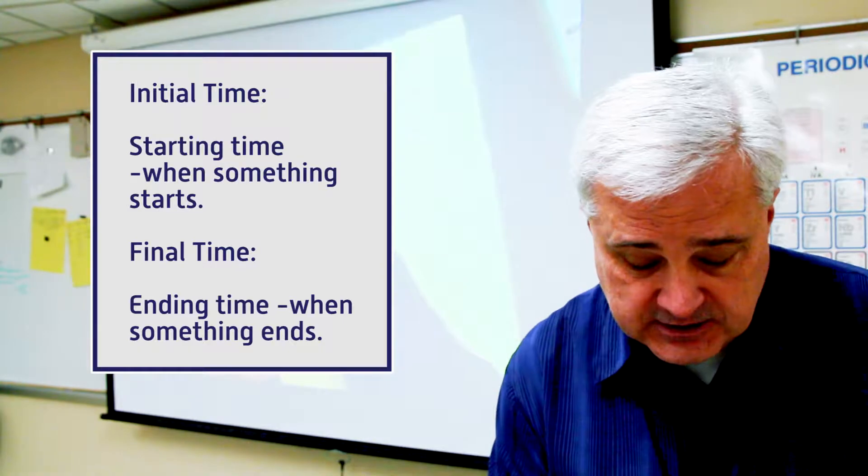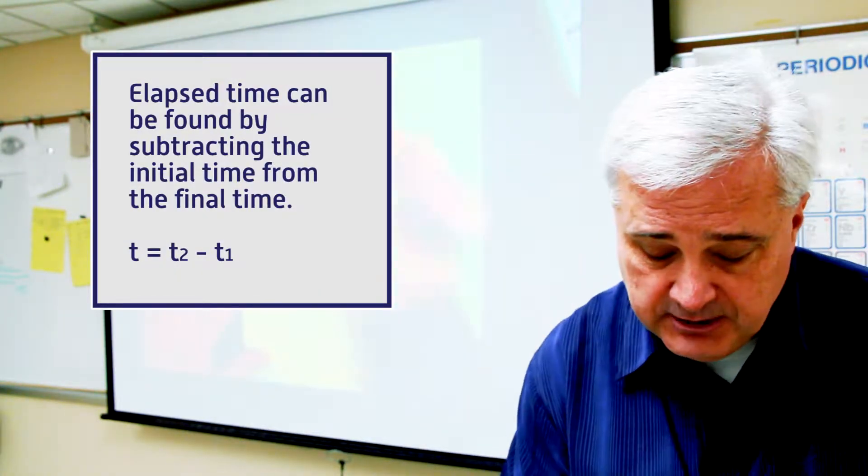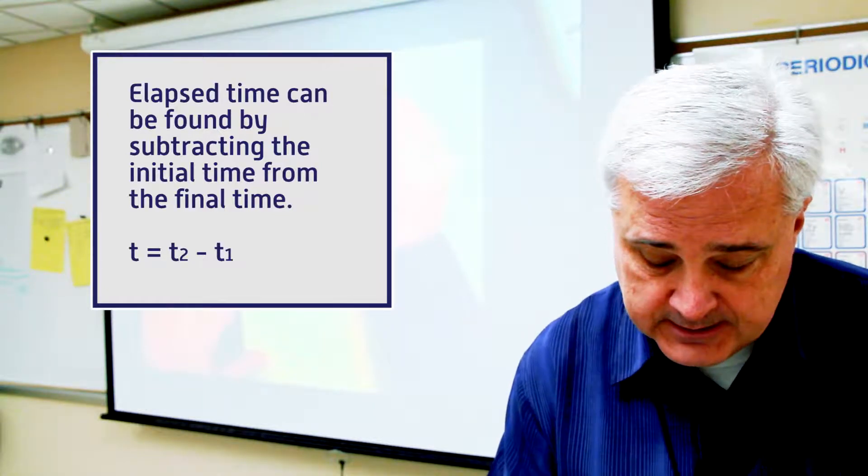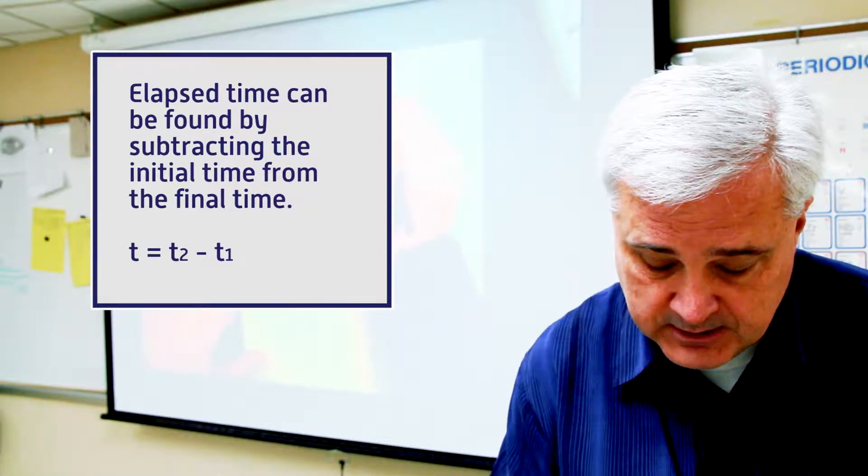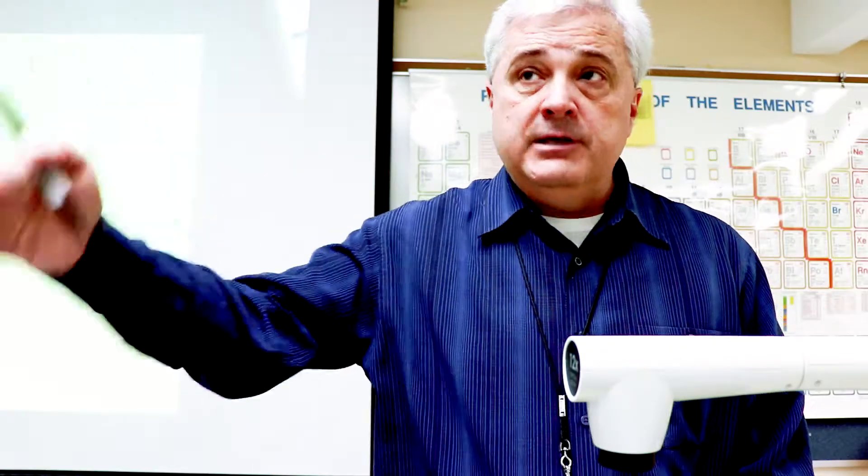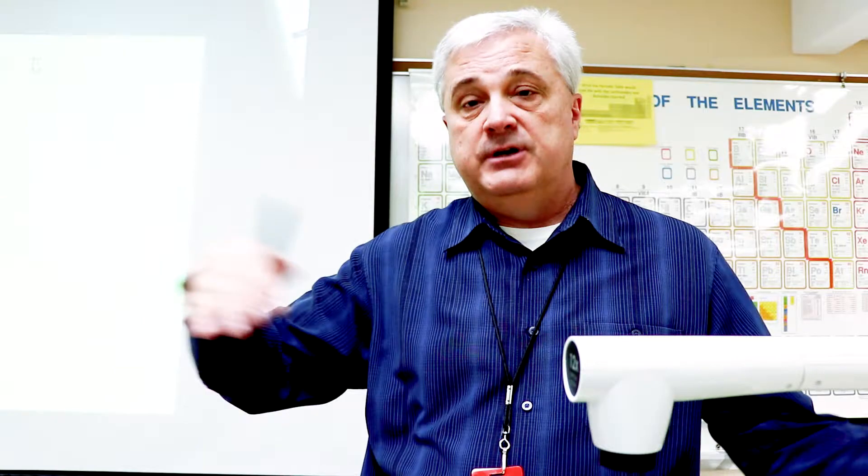Time is lowercase t as a rule. So we have t1 or t sub i. That's going to be the initial time. And then in the middle you can have t2, t3, t4, t5, t6, whatever. All of these would be interval times.